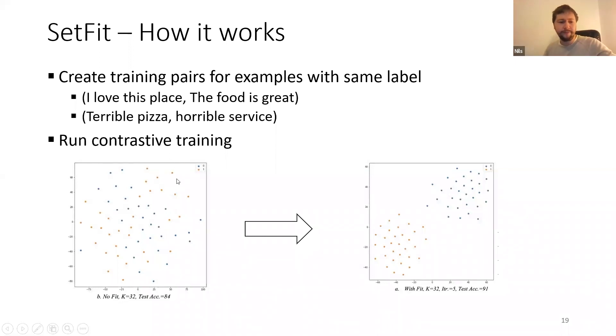And this transforms the vector space from something which looks like this where blue is negative reviews and orange are positive reviews to a really nice separated vector space where you can easily draw a decision boundary and say everything to the bottom left is positive, everything to the top right has a negative sentiment.